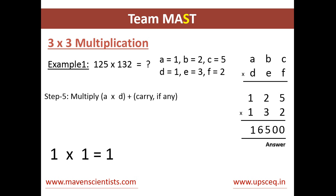So it's very easy — in just 5 simple steps and 5 very easy multiplications we get the result for 3-into-3 digit numbers.